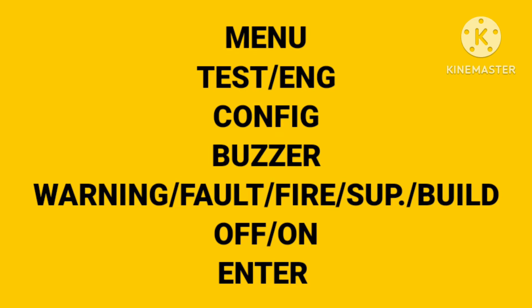For that, first go to Menu, then Test, then Engineering and Config, then Buzzer. We have options: Warning, Fault, Fire, or Speed. If you need to turn off on fault, you can turn it off. If you only want the buzzer to sound on fire, you can set it to Fire and turn it on.